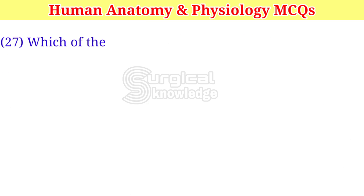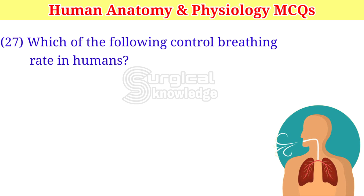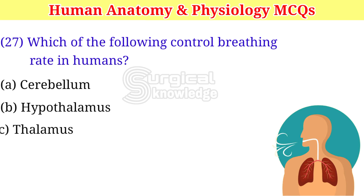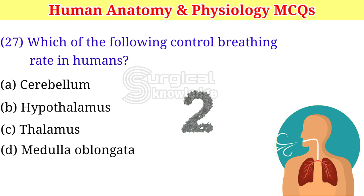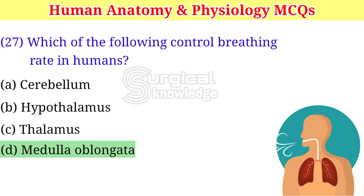Which of the following controls breathing rate in humans? A. Cerebellum. B. Hypothalamus. C. Thalamus. D. Medulla oblongata. Right answer is medulla oblongata.